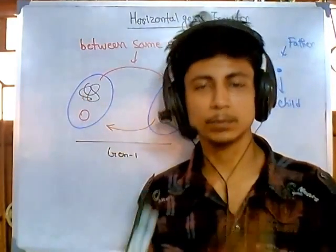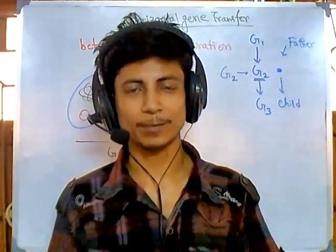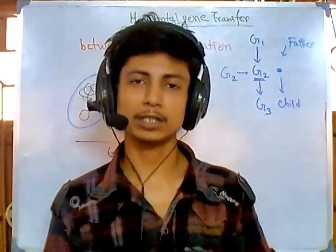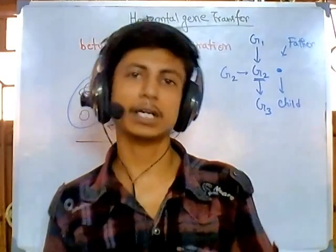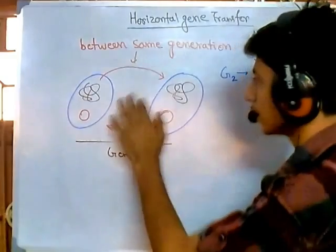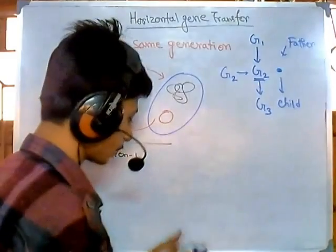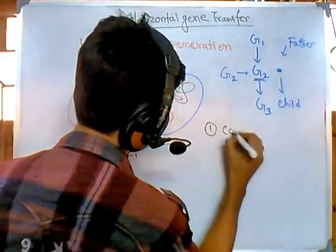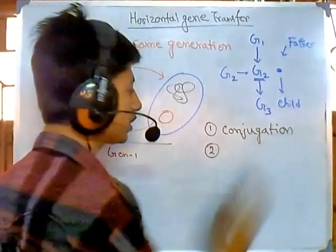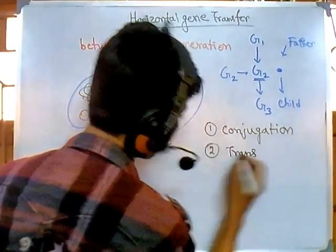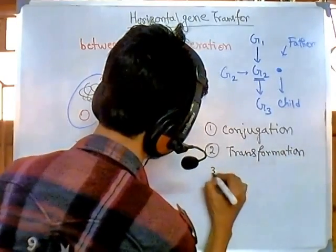We talk about HGT mostly in bacteria because it's most possible between bacteria — it's not possible between humans, like transferring a gene to your brother. It is possible for lower organisms like prokaryotes like bacteria. They can transfer their genes to other bacteria of the same generation using three important mechanisms: conjugation, transformation, and transduction.